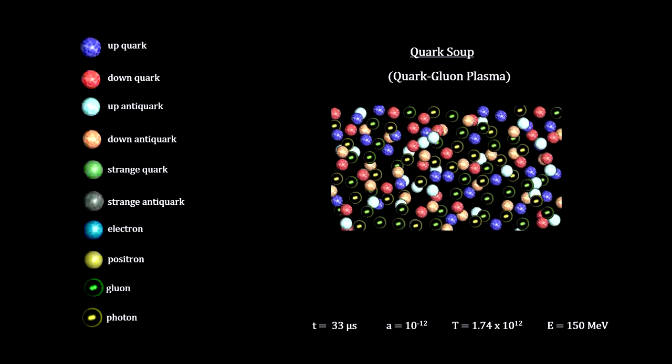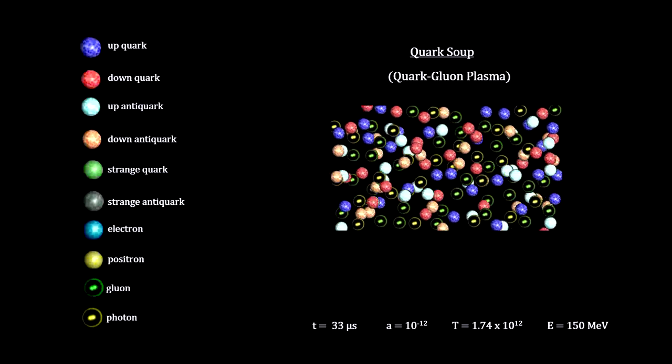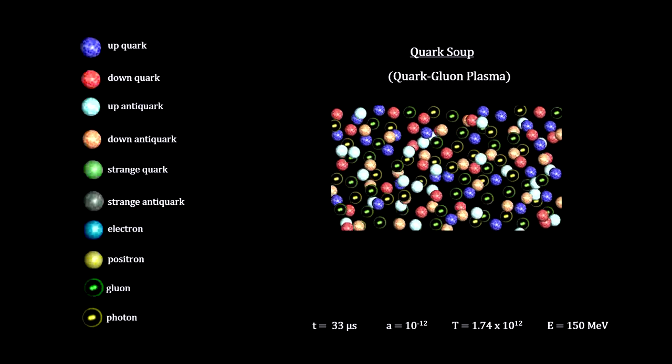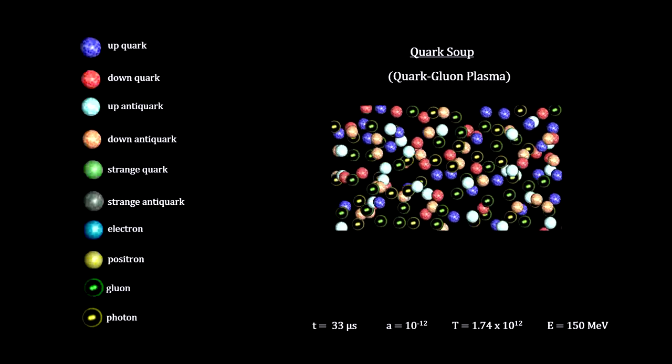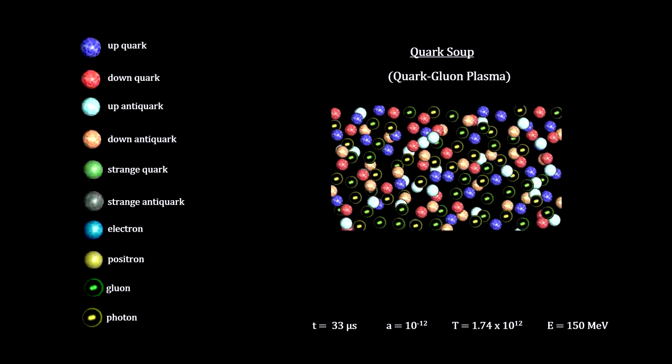Then, when the temperature of the universe cooled to around 1.74 trillion degrees, 33 microseconds into its expansion, created quarks and antiquarks could survive.